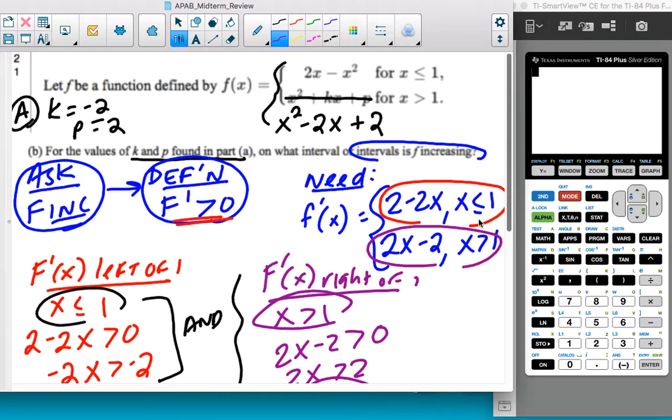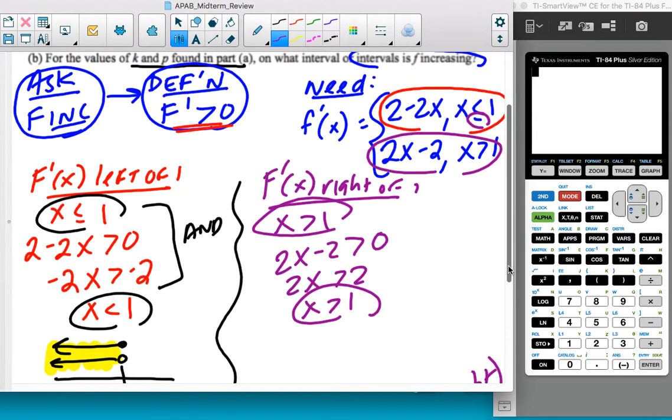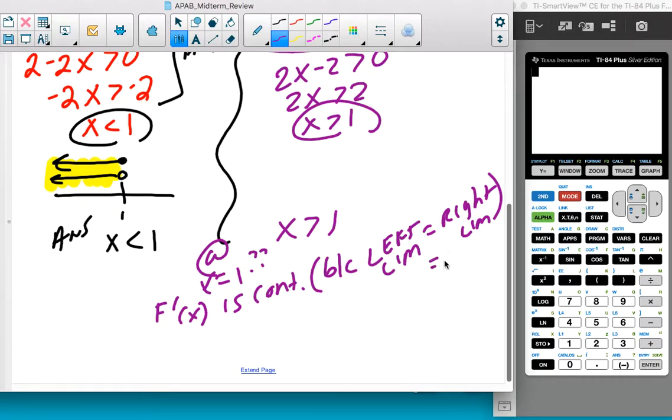And we know that, so the only reason we weren't able to have this equal to in part A is because in part A, we weren't sure if the function was differentiable. We had to show that it's differentiable. And here we're, now that we know that this is differentiable,